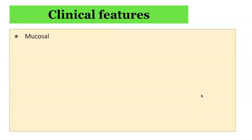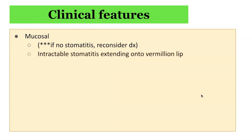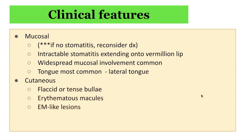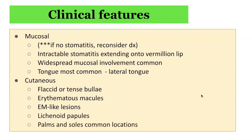In terms of clinical features, we can divide these into mucosal and mucocutaneous or cutaneous. In terms of mucosal, most cases of paraneoplastic pemphigus will be associated with stomatitis. If a patient does not have stomatitis, it is important to consider other potential differentials. Mucosal presentation includes intractable stomatitis extending onto the vermilion lip border. Widespread mucosal involvement is common, and the tongue is most commonly involved, including the lateral tongue. Cutaneous findings include flaccid or tense bullae, erythematous macules, erythema multiforme-like lesions, lichenoid papules, with the palms and soles being the most commonly affected areas.